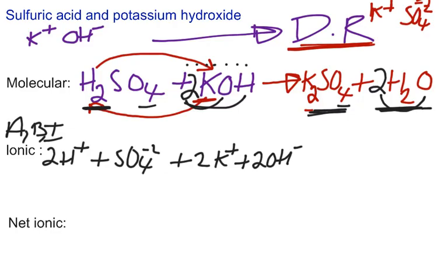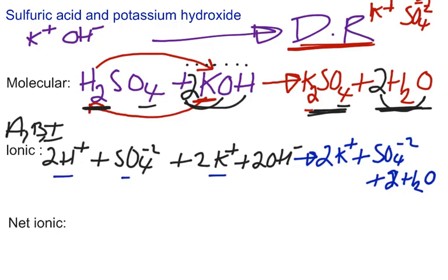Now that will give us on the product side 2K positive plus SO4 minus two plus water, two waters, 2H2O's. We don't break apart. We don't ionize water in this situation. We leave it as is. But the acid, the base, and the ionic compound, they get ionized. And that's our ionic equation.